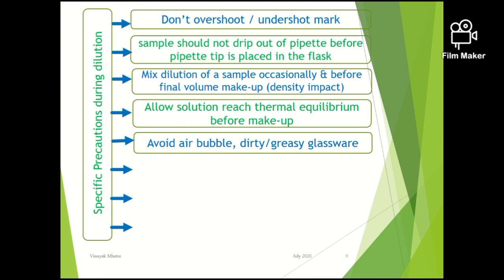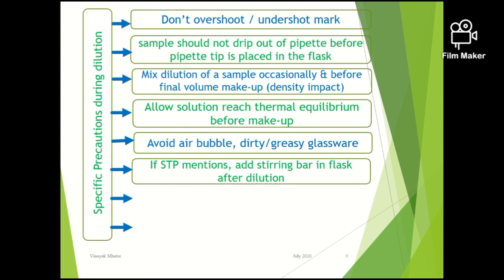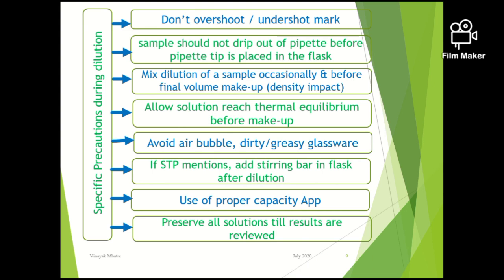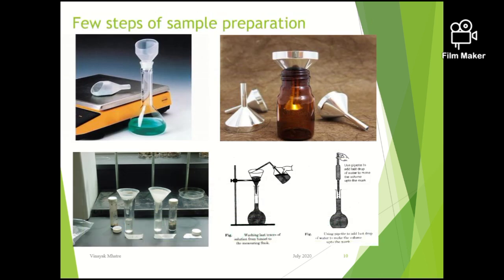If the test procedure mentions using a stirring bar, ensure it is always added after dilution. Use appropriate capacity apparatus — for example, be careful about selecting 20 ml versus 25 ml flasks or 200 ml versus 250 ml flasks, and maintain proper storage and segregation of these apparatus. Preserve all solutions until results are reviewed, as they may be useful in investigations. Diagrams in the presentation illustrate precautions such as use of a funnel, use of a weighing board, and making the final dilution correctly.